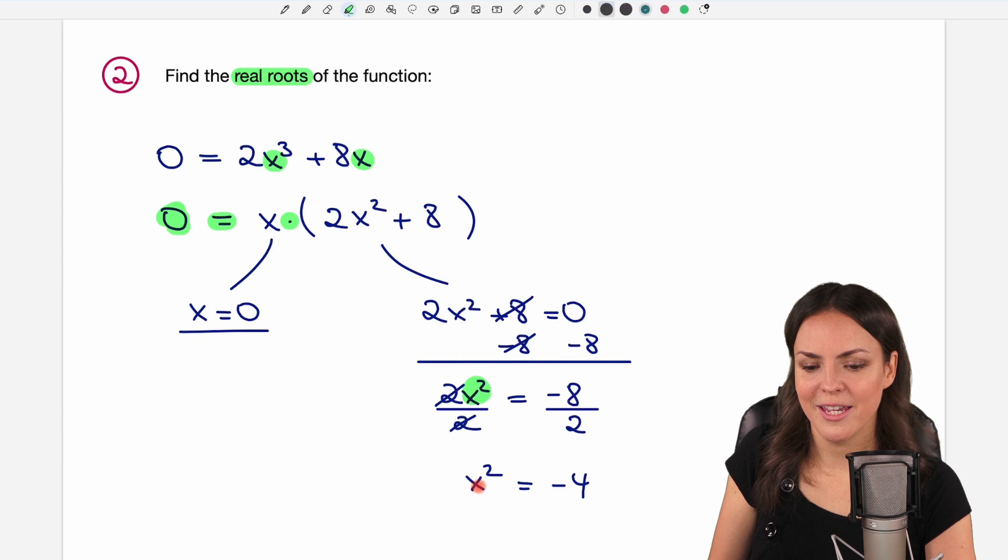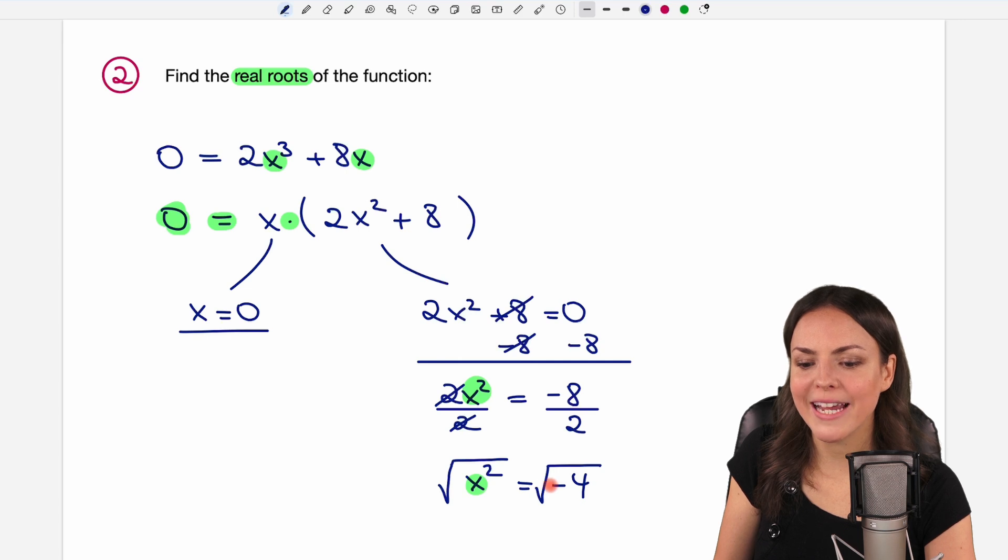Now, if we want to solve for x, we would have to get rid of the square here. So we would take the square root on both sides. A square root of a negative number doesn't work with real numbers. We're only searching for real roots, not complex roots. So this doesn't give us any real roots. So we don't get more roots. The only root we found is x equals zero.